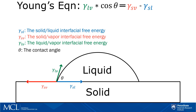When measuring the contact angle, we're investigating the balance of forces acting at the interfaces. More specifically, we're looking at how the interfacial free energies are shaping that liquid drop on a solid surface. Thomas Young was the first to formally investigate this phenomenon in 1805, followed by Athanase and Paul Dupré in 1869.